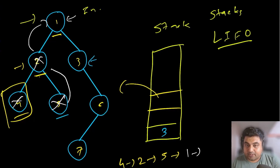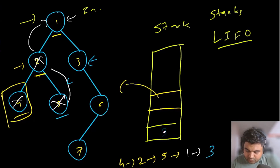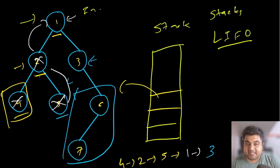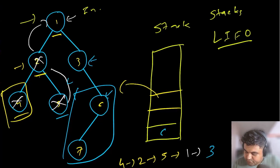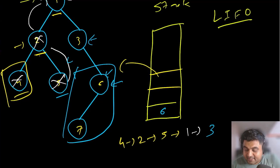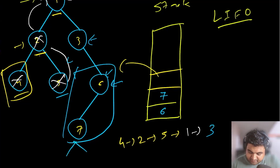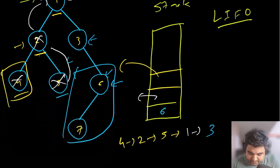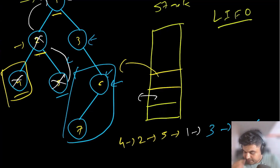For node three, it does not have a left child, so we pop node three out. After popping node three, it still has a right child — the right subtree — that we haven't taken care of. So we push node number six. We then check whether node six has any left child — yes, it does. So we push node number seven. Node seven does not have any more children, so that is a terminating case — we pop node seven out. After popping node seven, we pop node six, and then we are done with our iteration.